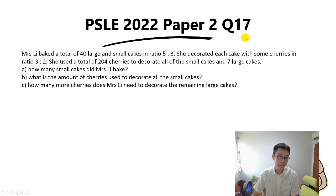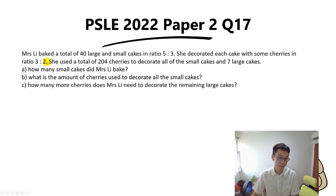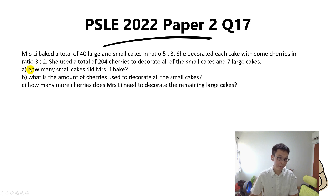We'll go through PSLE 2022 Paper 2 Question 17, the last question of the paper. Mrs Lee baked a total of 40 large and small cakes in a ratio of 5 to 3. She decorated each cake with cherries in a ratio of 3 to 2, and used a total of 204 cherries to decorate all the small cakes and seven large cakes. Part A asks: how many small cakes did Mrs Lee bake?